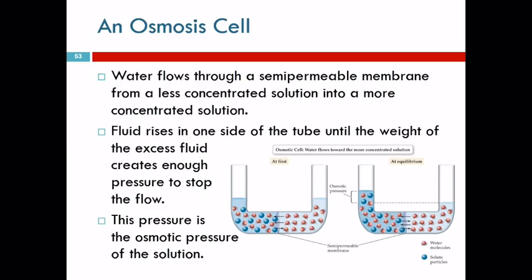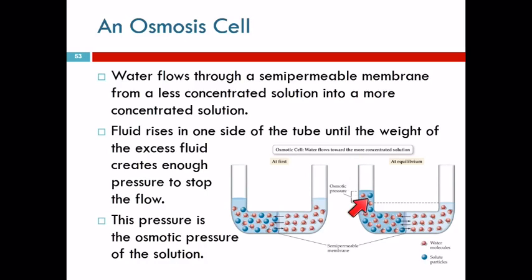What's going to happen is water will move from the pure side to the salty side more than the other way, and the level of liquid on that side is actually going to rise up — which is not what we expect to happen spontaneously. It would never happen without the membrane and two different concentrations. But because we have them, the water moves over to dilute the concentrated solution. As it rises it creates a difference in pressure, and when the liquid stops rising, that height difference is called the osmotic pressure.